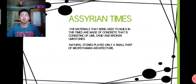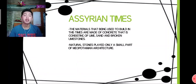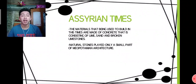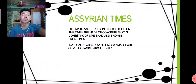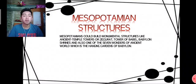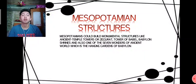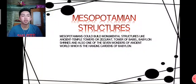In Assyrian times, the materials used to build were made of concrete, consisting of lime, sand, and broken limestone. Natural stones played only a small part in Mesopotamian architecture. Mesopotamians are known as great builders.